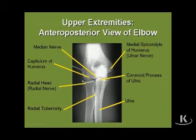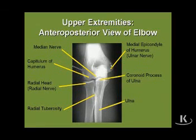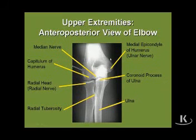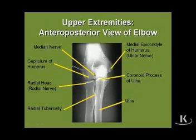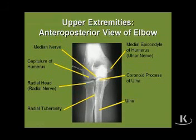Looking at this x-ray, the important injuries that occur in this area have associated nerve injuries. The ulnar nerve passes right behind the medial epicondyle, just posterior to it. So if you were to see an x-ray with a medial epicondyle fracture, you would be concerned about an ulnar nerve injury. The median nerve crosses right in front of the supracondylar region of the humerus, so a fracture across that region can injure the median nerve.